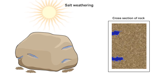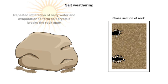After repeated cycles of wetting and evaporation, the salt crystals may grow large enough to pry apart or shatter the rock. This process is called salt wedging.